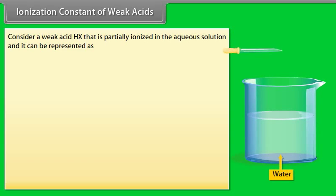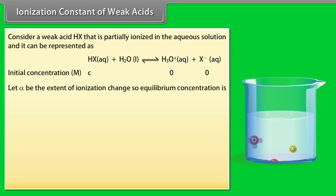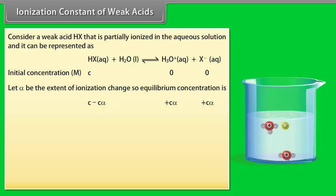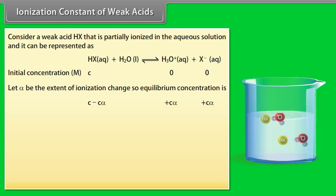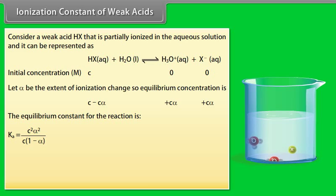Ionization constants of weak acids: Consider a weak acid HX that is partially ionized in aqueous solution. Let the initial concentration of HX be C and let alpha be the extent of ionization. The equilibrium concentrations are: HX = C − Cα, H₃O⁺ = Cα, and X⁻ = Cα.